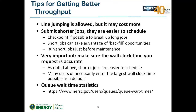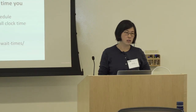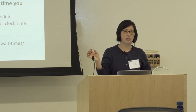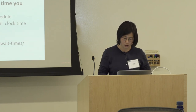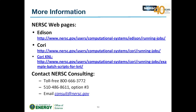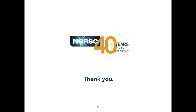For better throughput, request shorter jobs since they're easier for backfill. Estimating your walltime more accurately also helps throughput. More information is available on the running jobs pages, especially the KNL page. You can always send a ticket to NERSC consulting with running jobs questions.